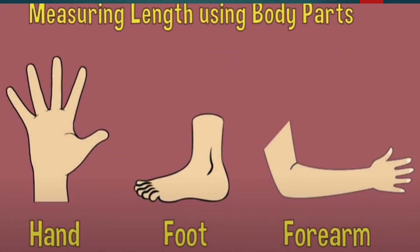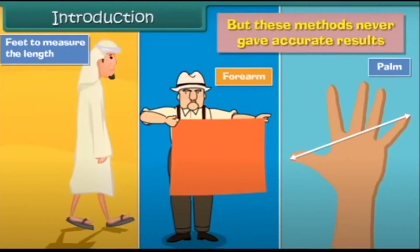Earlier, people used their body parts such as hand span, foot, and forearm for measuring different objects. But these body parts are not used as standard units of measurement, because the length of the palm and hand are different for different persons, which causes error in the measurement.